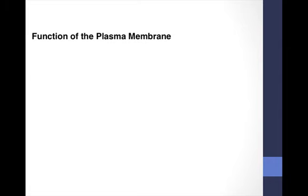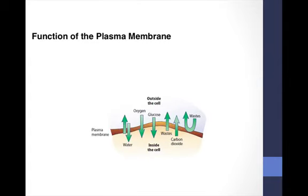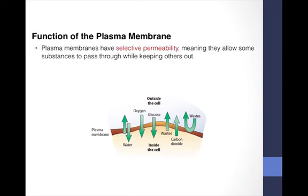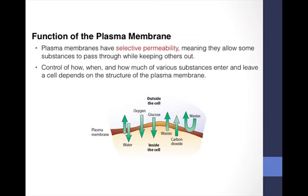Another function of the plasma membrane is to allow certain things into and out of the cell. As you can see, water passes freely both ways, oxygen and glucose go in, and wastes and carbon dioxide — which is also a waste — go out. This means the plasma membrane has what's called selective permeability, meaning it allows some substances to pass through while keeping others out. The control of how, when, and how much of various substances enter and leave a cell depends on the structure of the plasma membrane.